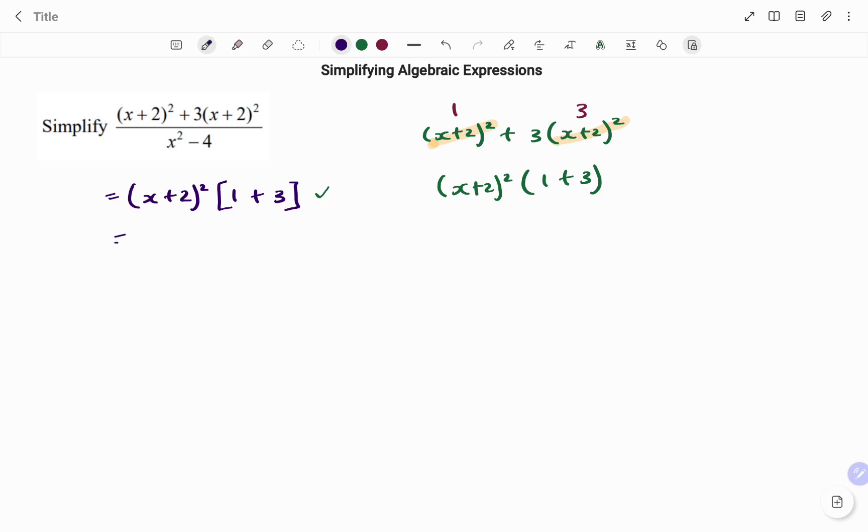So simplifying, I'm going to do the same for my denominator. For the denominator, I have x squared minus 4. It's two terms separated by the minus and both terms are perfect squares. So this is the same as x squared minus 2 squared.